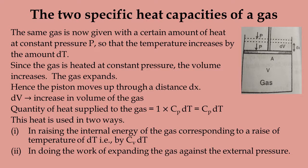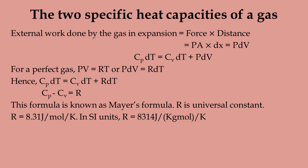The heat is used in two ways: first, in raising the internal energy of the gas corresponding to a rise in temperature of dT; second, in doing work expanding the gas against external pressure. The external work done in expansion equals P·dV. Therefore, Cp·dT = Cv·dT + P·dV. For a perfect gas, P·dV = R·dT, so Cp − Cv = R. This is known as Mayer's formula: the difference between the two specific heat capacities equals R, the universal gas constant.